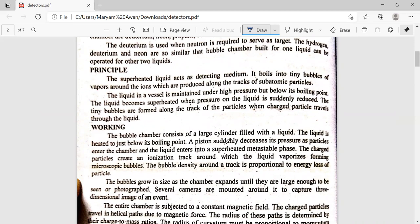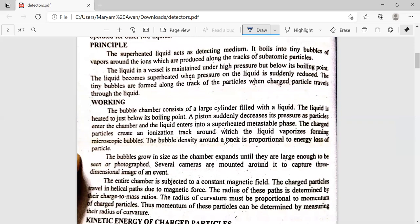The liquid is in a superheated metastable phase. Now the charged particles create ionization tracks. Wherever it goes, ionization happens. And wherever ionization happens, the tracks start to be vaporized and form microscopic bubbles. The density of the tracks is proportional to the energy loss of particles. If the particles lose more energy, there will be more bubbles. If they lose less energy, there will be fewer bubbles.